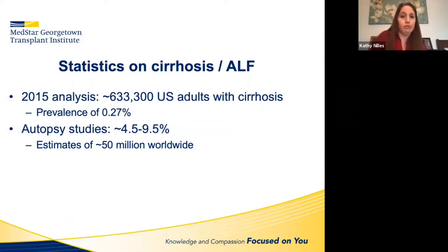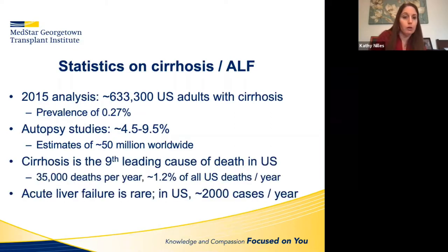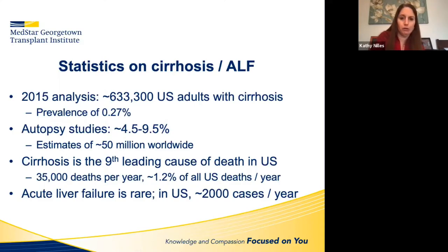Some background statistics: there are approximately 633,000 adult patients in the US with cirrhosis, a prevalence of about 0.27%. Worldwide autopsy studies suggest a prevalence of about 4.5 to 9.5%, estimating about 50 million people worldwide with cirrhosis. It's the ninth leading cause of death in the US, about 35,000 deaths per year or 1.2% of all deaths, whereas acute liver failure is much rarer — about 2,000 cases per year — with a mortality of about 30 to 50%.